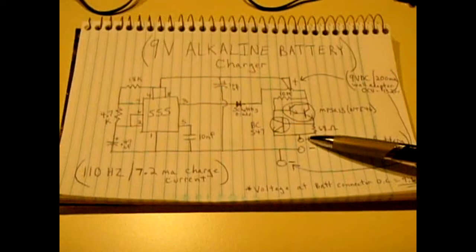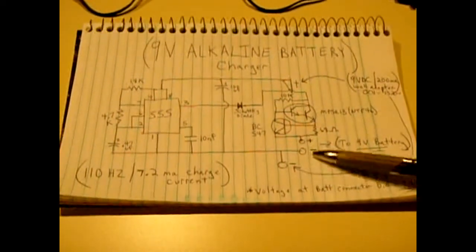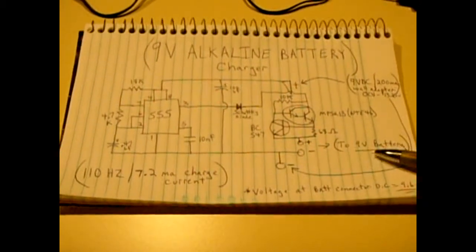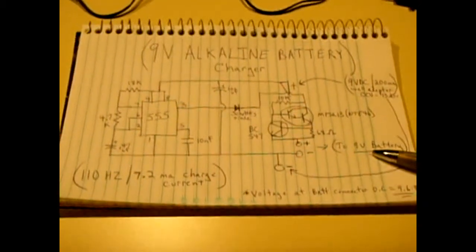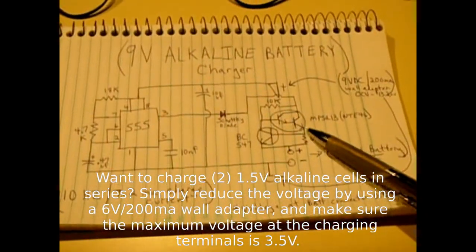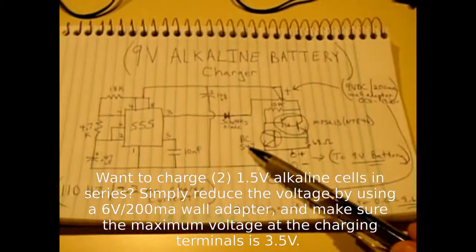You could leave this on here for a long time because once it reaches 9.5 or 9.6 you will no longer have that voltage going into the battery, the current will be dropping off. Now this transistor here is a Darlington NPN, it's an NPSA13 or an NTE46.